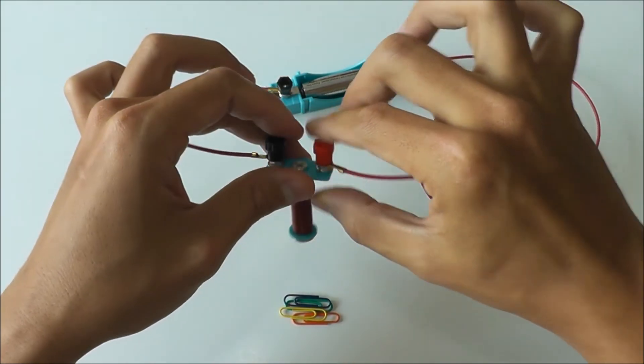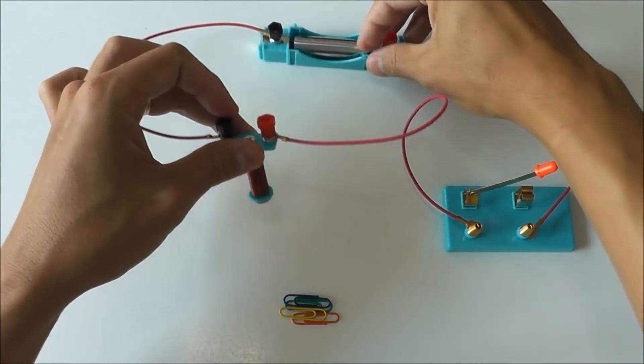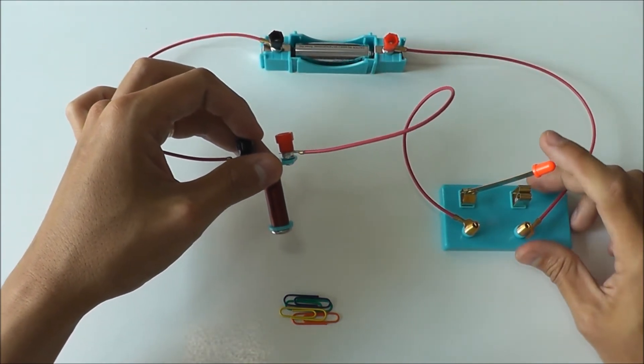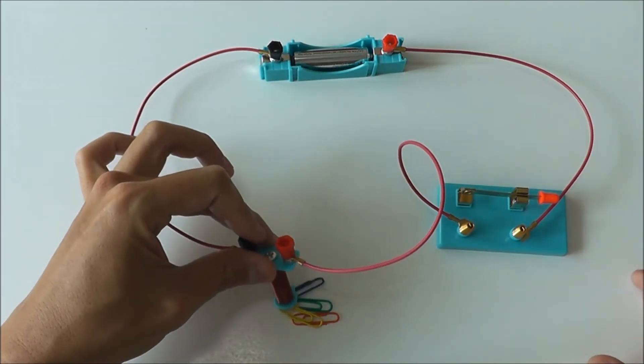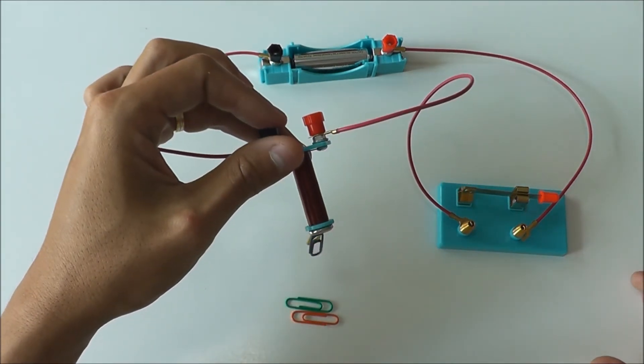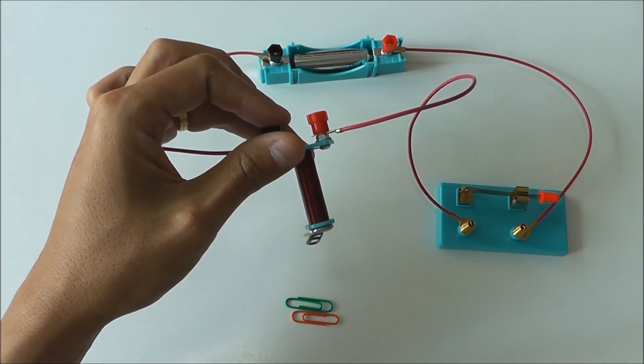Now we are ready to turn on the electromagnet. If I place it over the paper clips, you can see that it picks them up. Paper clips are made of steel, so it's a magnetic material that will be attracted by the electromagnet.